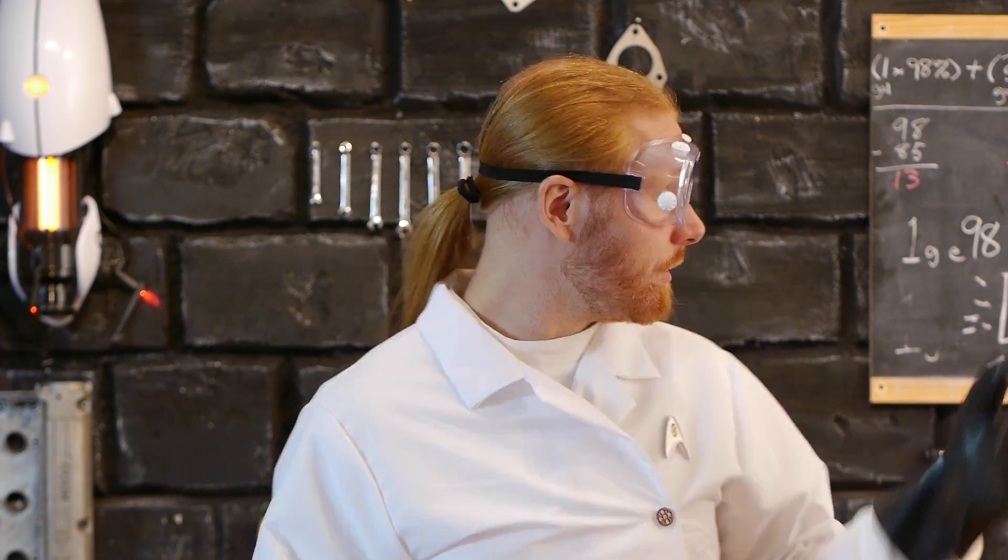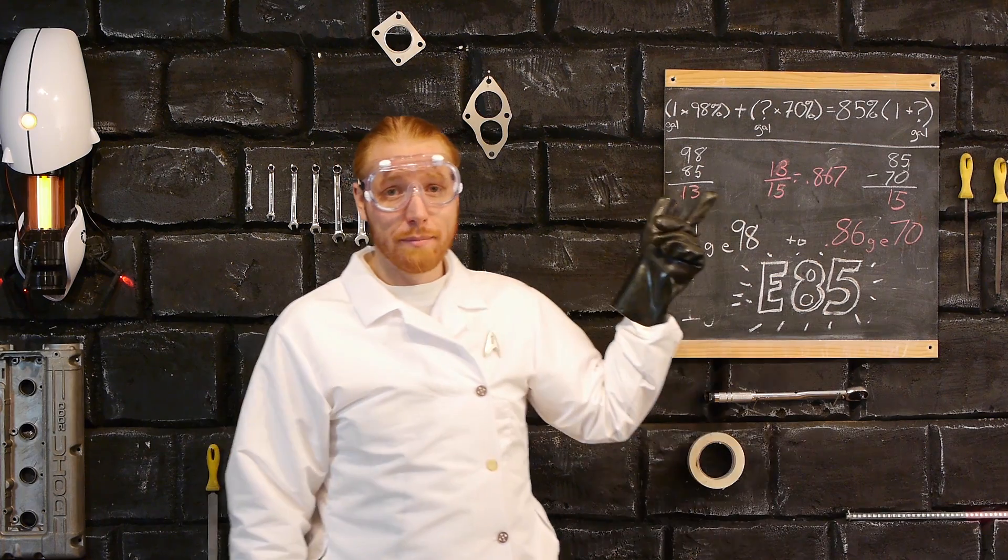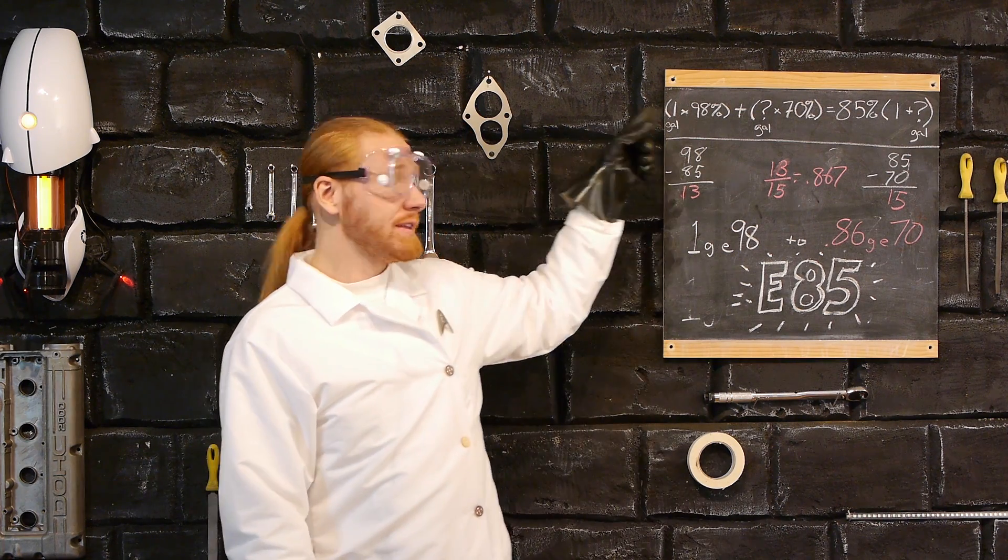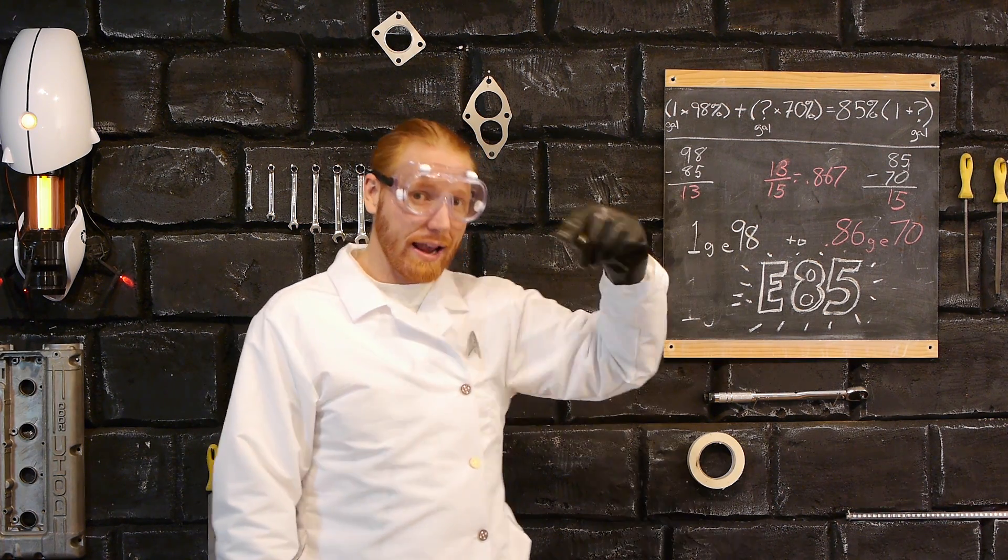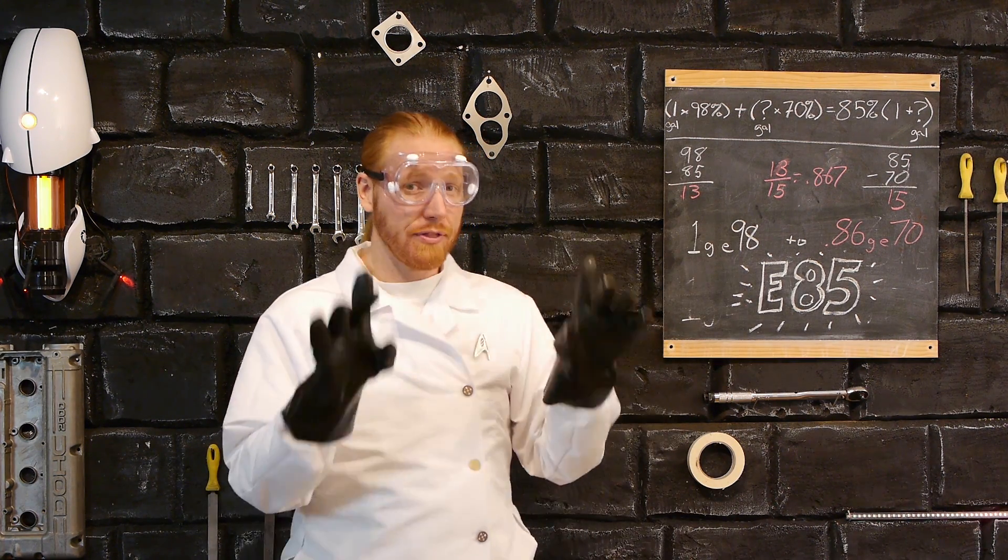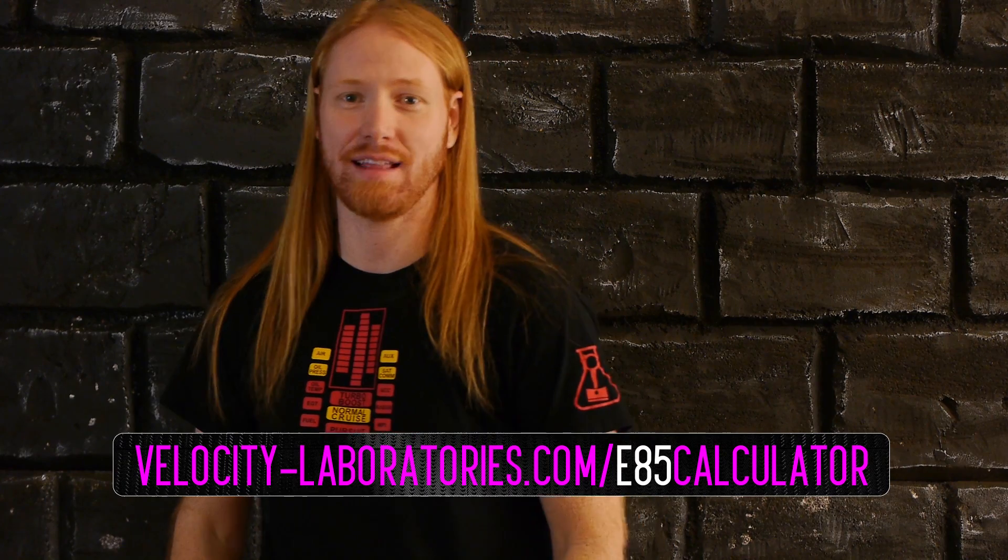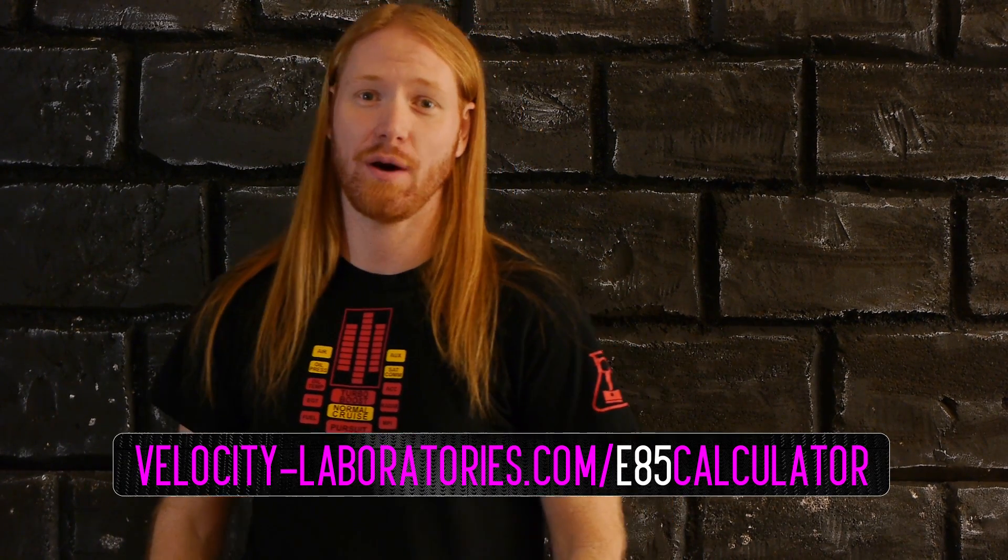The other option that you have is you can actually mix your own. You can just grab some E98 and use the following formula to figure out what your mix ratio is. Oh my god, math. Okay, here we go. So this is the actual formula that you're going to use and I will post that in the comments below, but there's a really easy way to figure it out. Actually, the really easy way to do it is just use the calculator that I added to the Velocity Labs website. Or if you want a challenge, you can always try to follow along to this poorly explained math example.